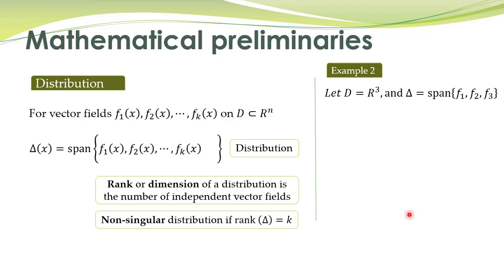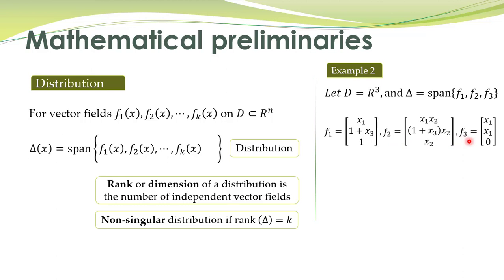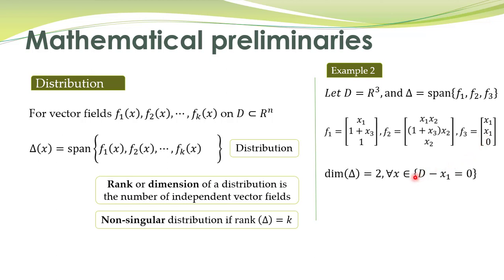Another example: we have a distribution which is the span of three vector fields f1, f2, and f3, where f1, f2, and f3 are given here. The rank of this distribution is 2, because we can get, for example, one vector by multiplying x2 with another vector. So these two vectors are not independent of each other, but the third one is independent. Therefore, rank of this distribution is equal to 2.